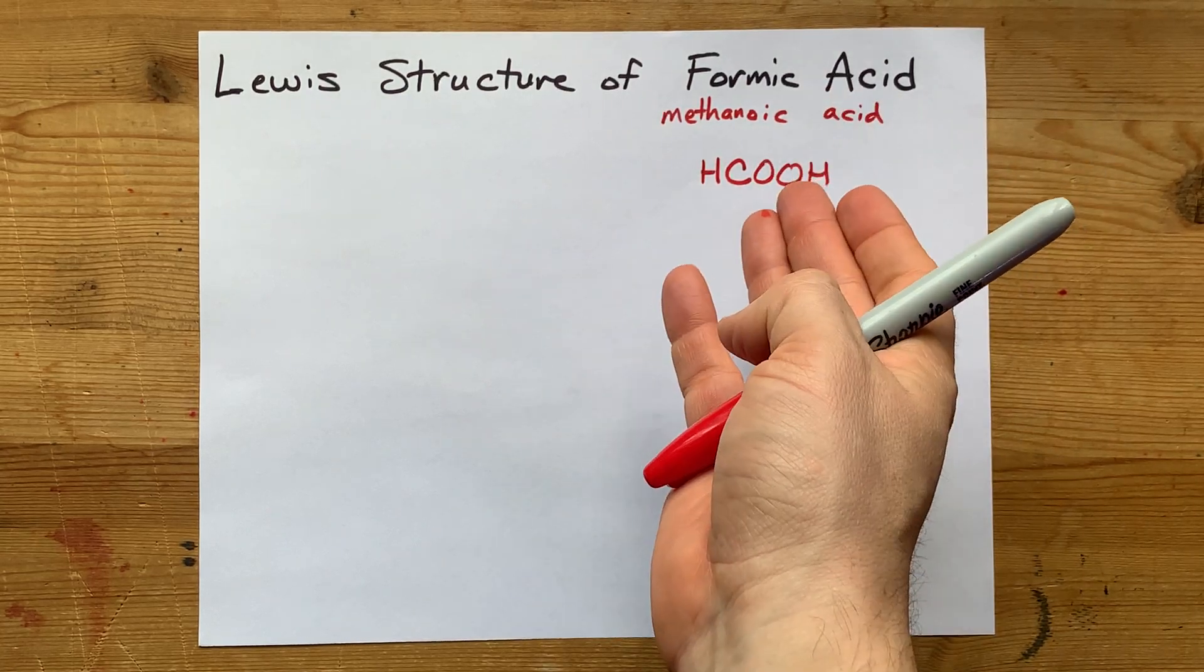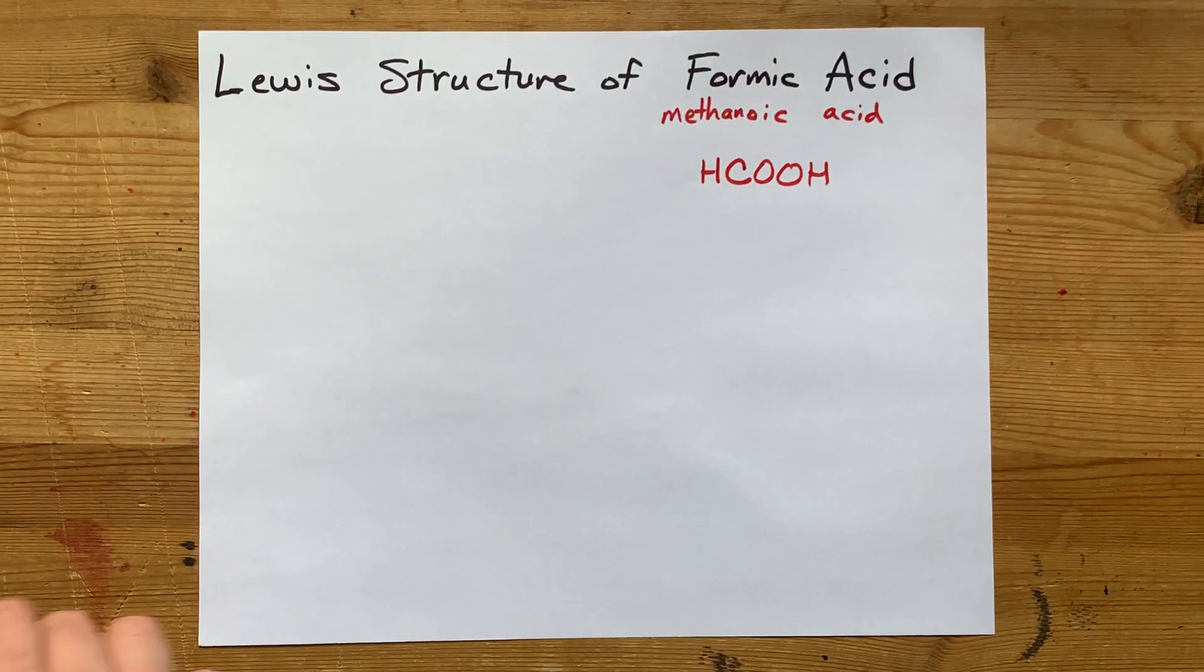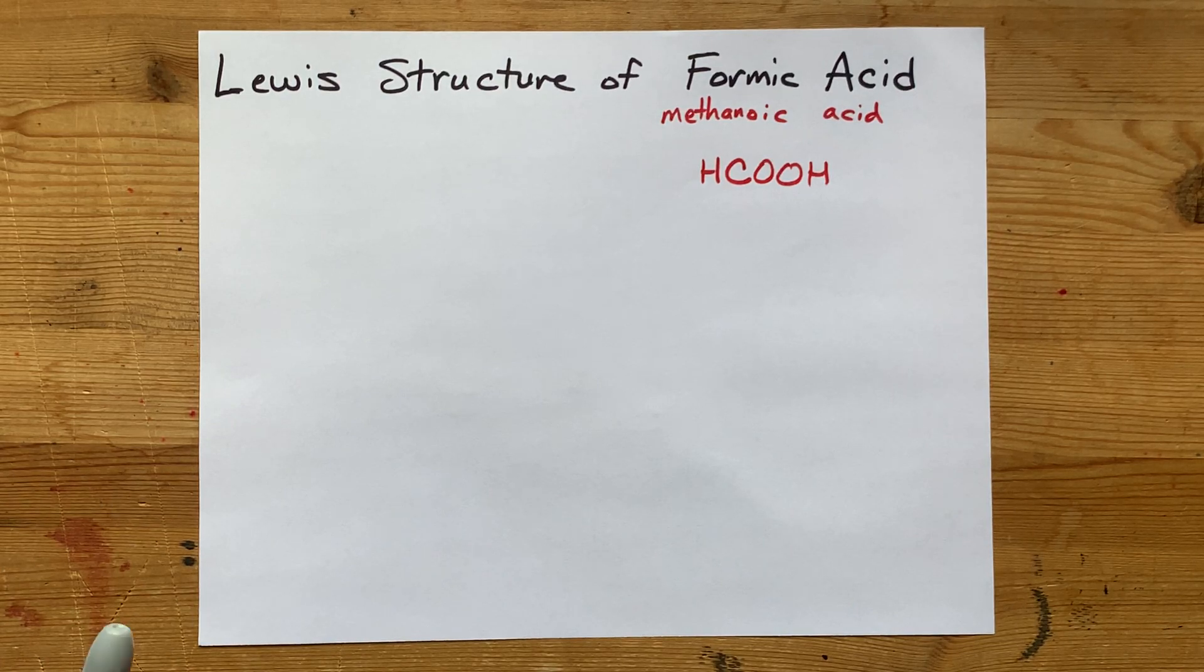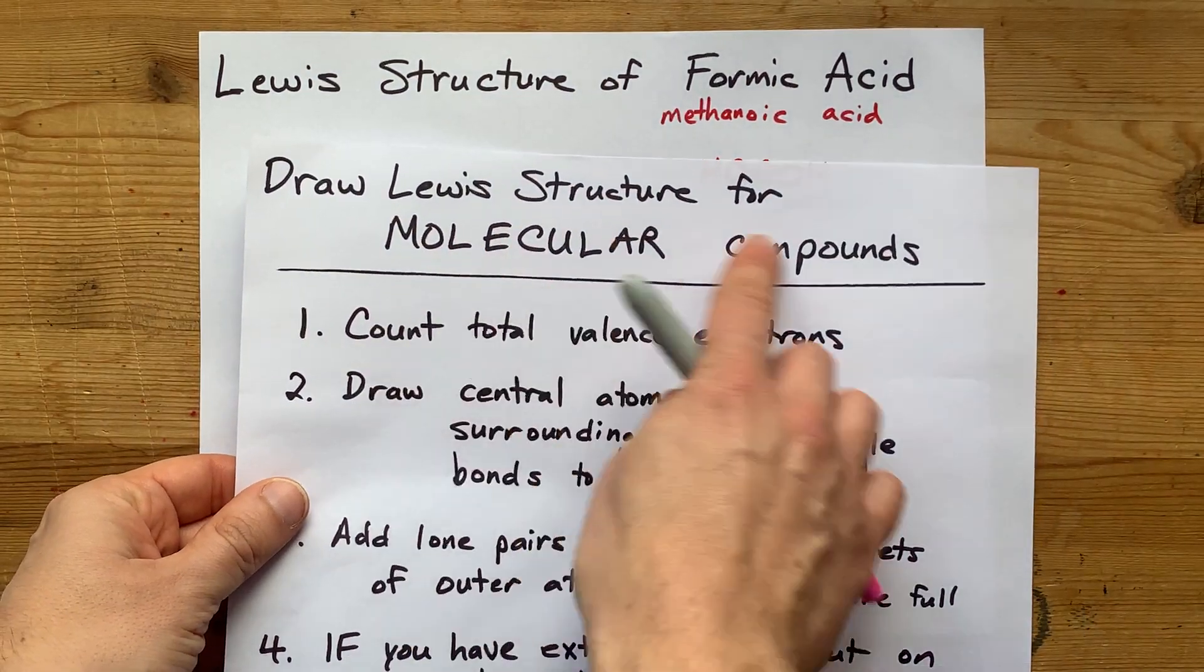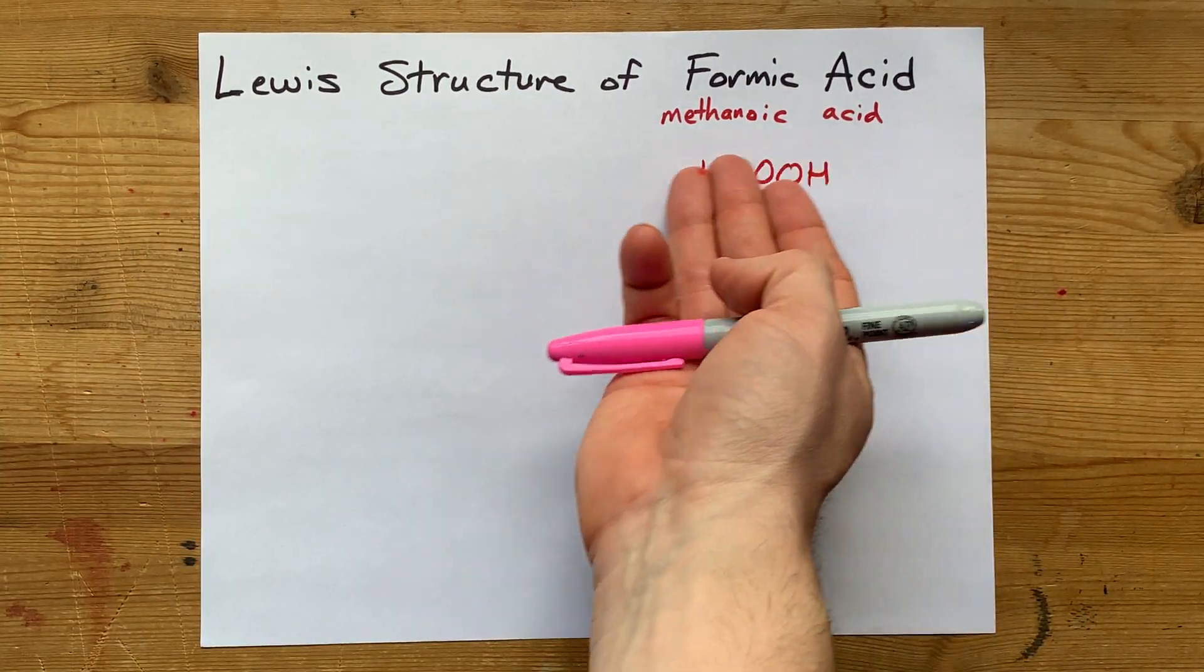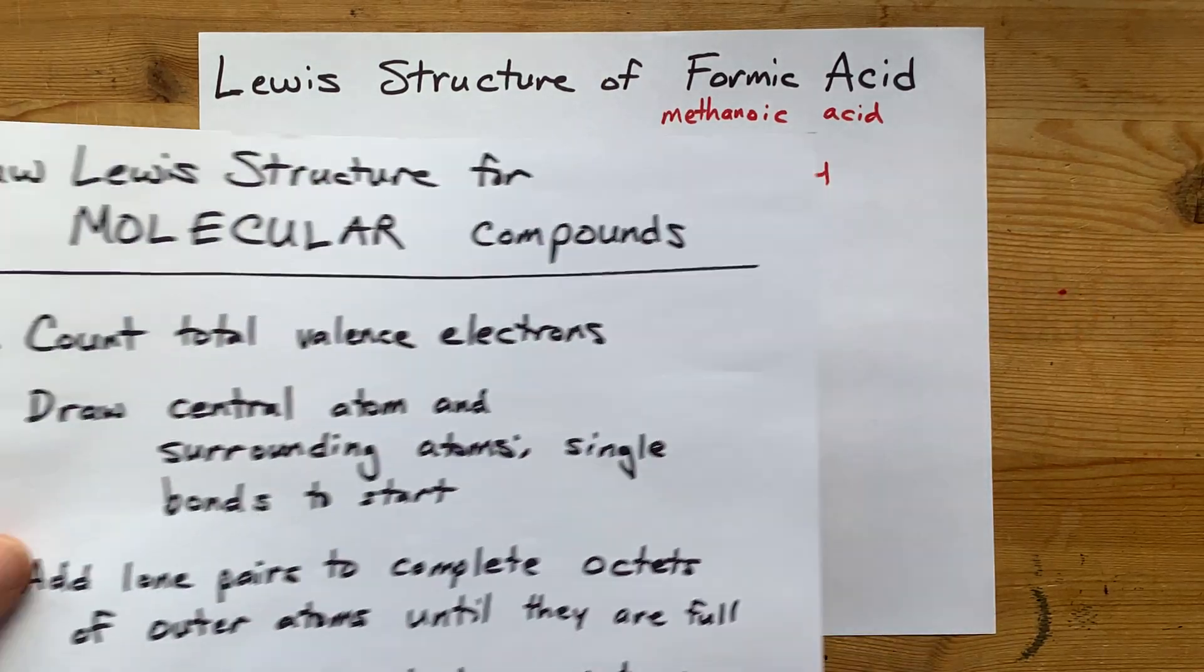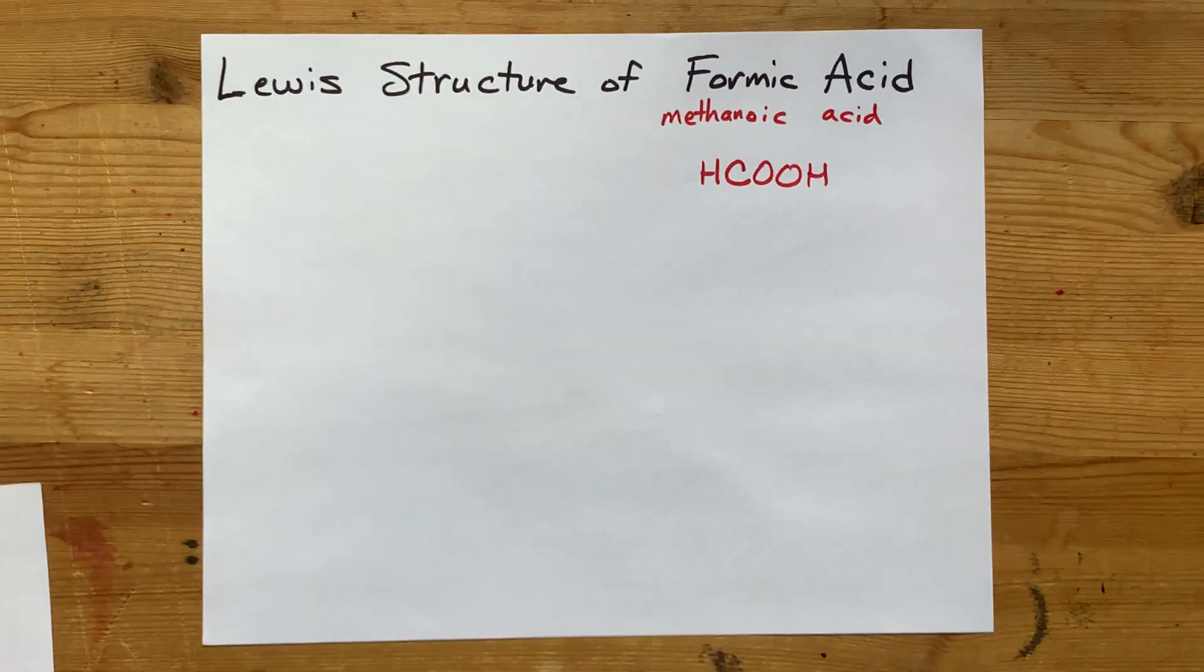You have to kind of know that carboxylic acids are structured this way before you even begin this question. Now, the way that I draw my Lewis structure for molecular compounds, and this is a molecular compound because there's no metals in it, it's all non-metals, is to count the total number of valence electrons that I'm going to be dealing with.